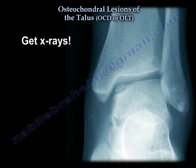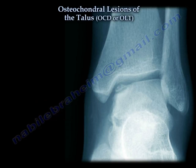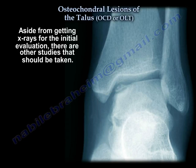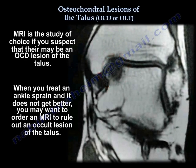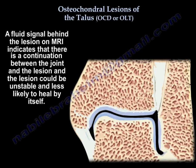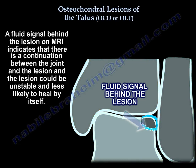You start by getting x-rays, which may show nothing, some lucency, or a loose fragment. MRI is the study of choice if you suspect the lesion. When you treat an ankle sprain and it does not get better, you may want to order an MRI to rule out an occult lesion of the talus. A fluid signal behind the lesion on MRI indicates there is communication between the joint and the lesion.